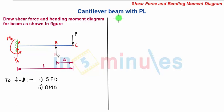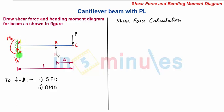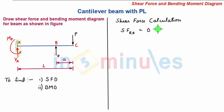We start with the shear force calculation, taking a section towards the left hand side and moving it towards the right hand side. We first take a section towards the right of A and very near to it. By considering the left hand side of the section, the only force is VA which is upward, so positive. Since the value of VA is 0, the shear force towards the right of A is 0 kN.